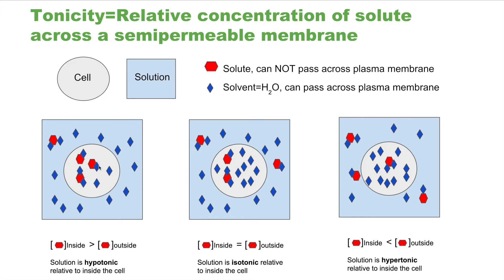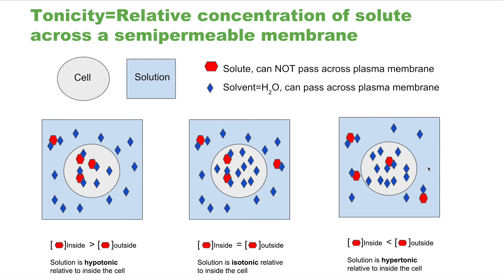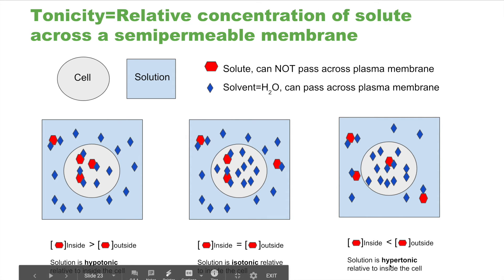The second situation is when the concentration of solute is exactly the same outside the cell as inside the cell. We label such a solution isotonic. The third situation is when the concentration of solute is higher in the solution compared to inside the cell. Such a solution is said to be hypertonic — hyper means more — meaning the concentration of solute outside the cell is higher than inside.